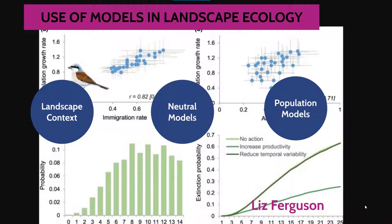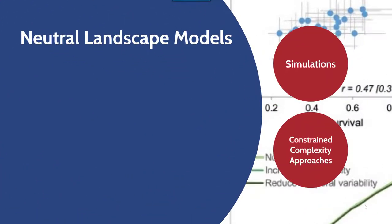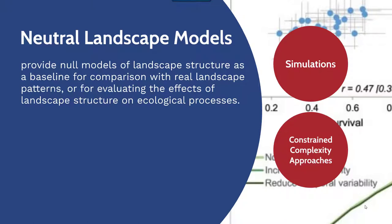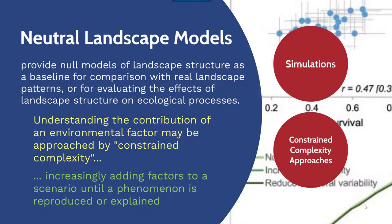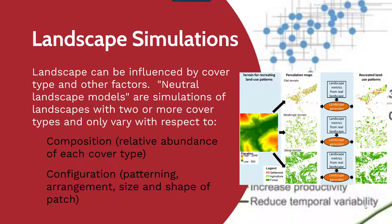Another important concept to understand is neutral models. Neutral landscape models provide null models of landscape structure as a baseline for comparison with real landscape patterns, or are used for evaluating the effects of landscape structure on ecological processes. They are important because understanding the contribution of an environmental factor may be approached by constrained complexity — where you increasingly add factors to a scenario until a phenomenon is reproduced or explained — and we oftentimes use simulations of varying degrees of complexity for these neutral landscape models.